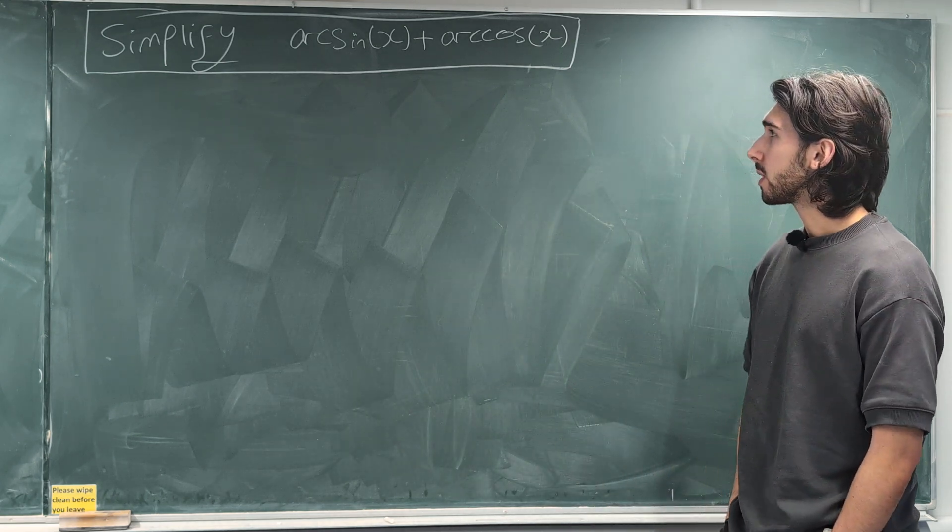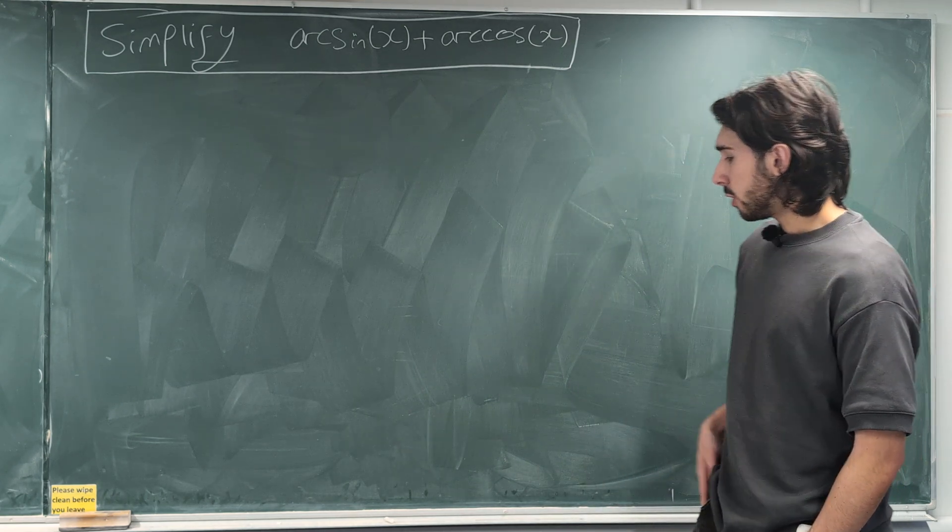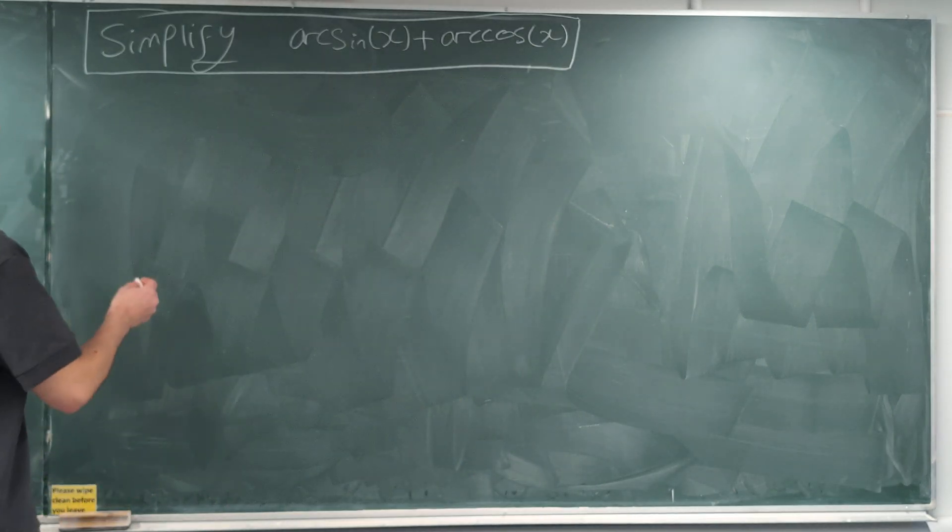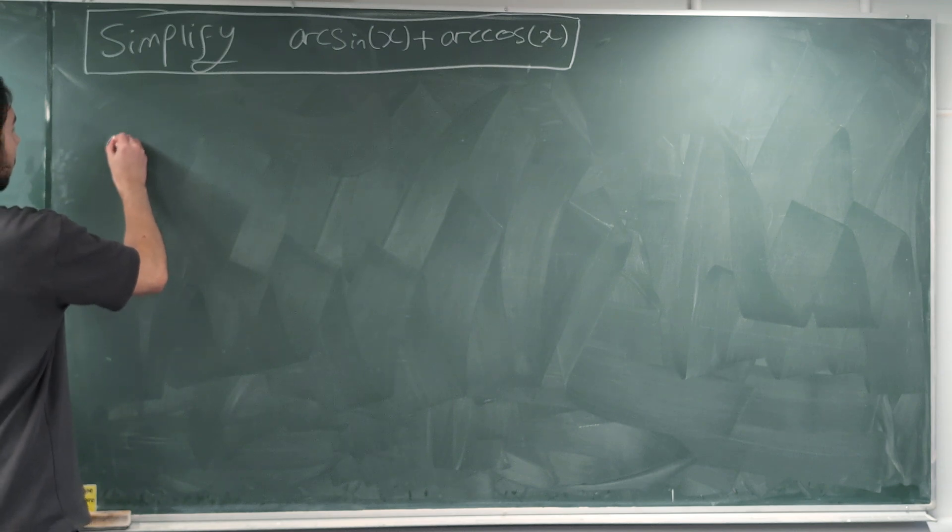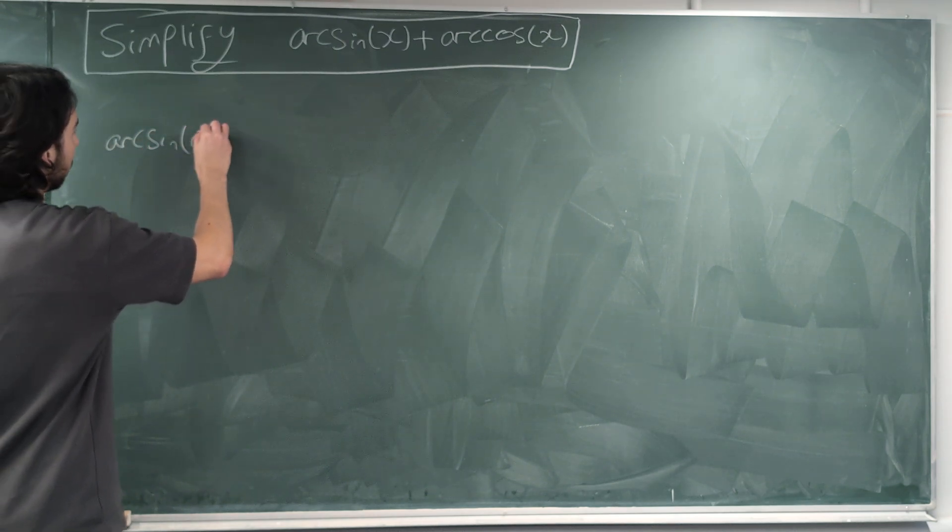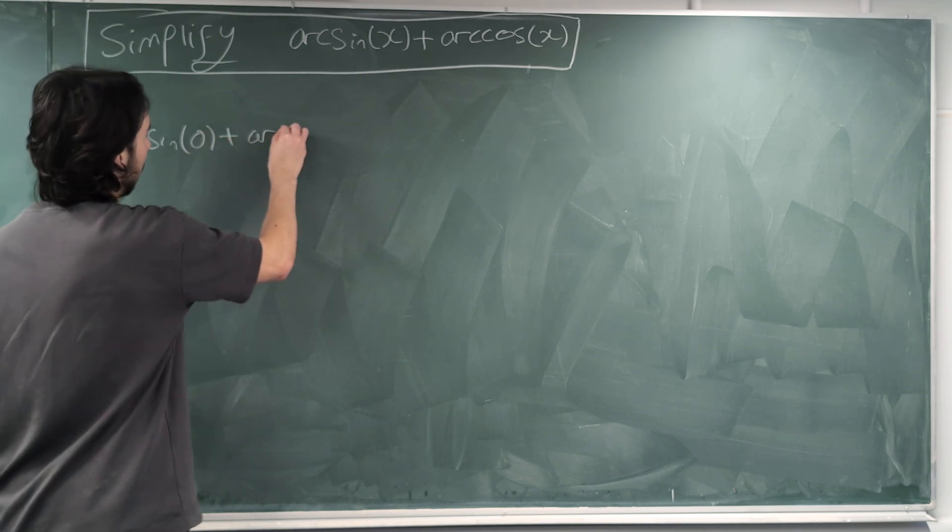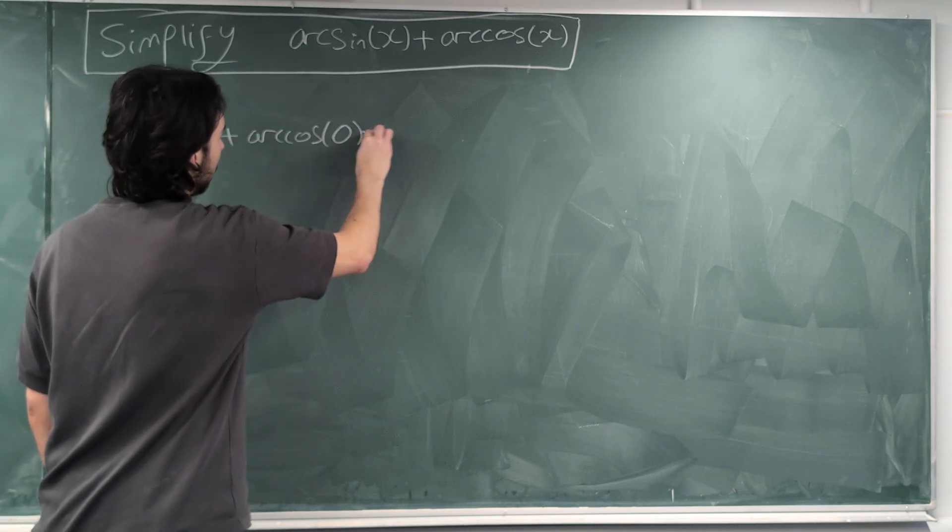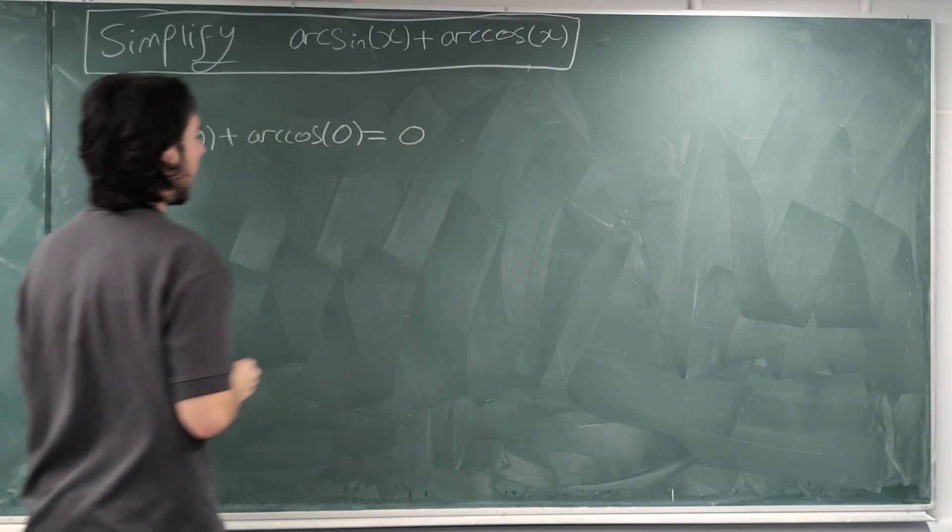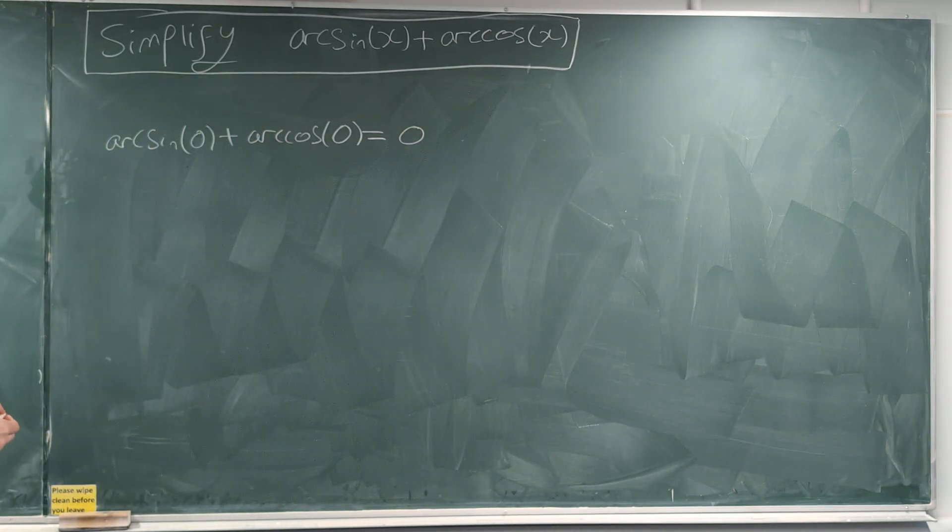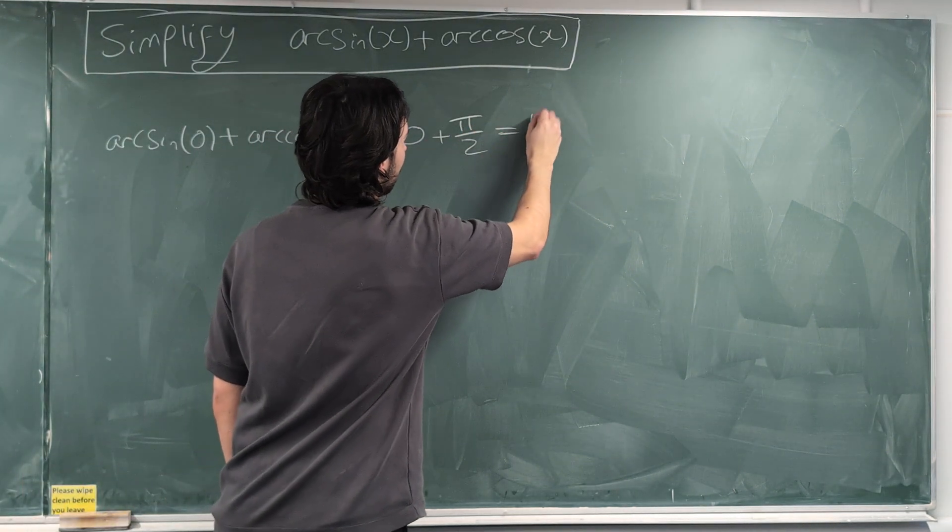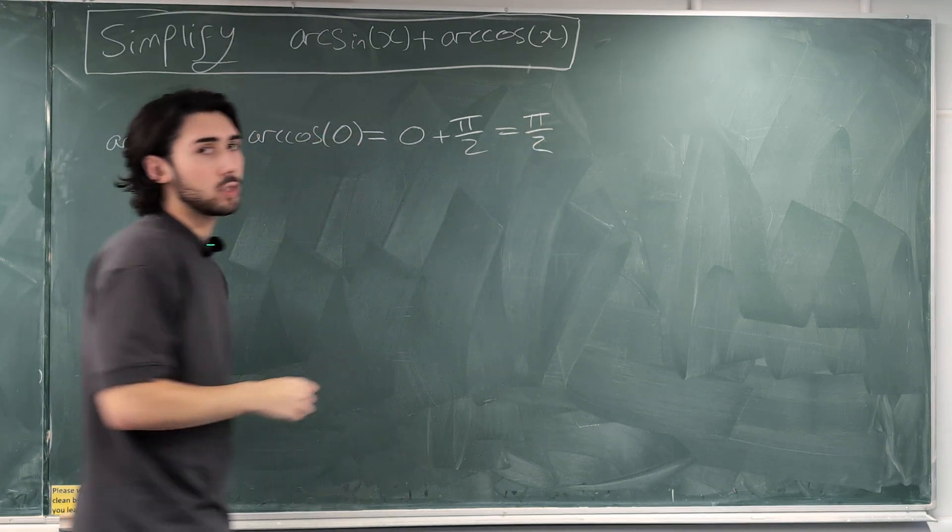You could just do it by trial and error. So, for instance, if you try random numbers, you'll find that it's always equal to the same thing. So, arcsin(0) + arccos(0), what would that be? Well, arcsin(0) is 0, and arccos(0) would be π/2. So, when you plug in 0, you get π/2.